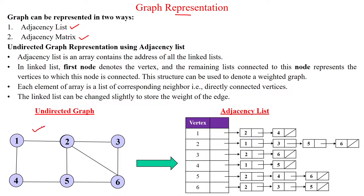Here, an undirected graph is given, and we are going to represent it using an adjacency list. An adjacency list is defined as an array which holds the addresses of all the linked lists — a collection of linked lists in array format. In the linked list, the first node denotes the vertex, and the remaining nodes connected to it are its neighbors. So vertex 1 is connected to 2 and to 4, so 2 is added to the linked list and then 4 is added.